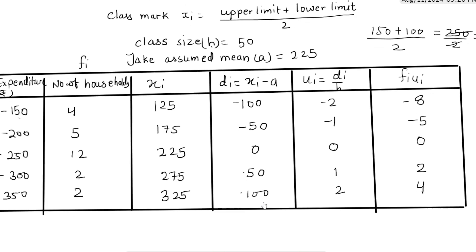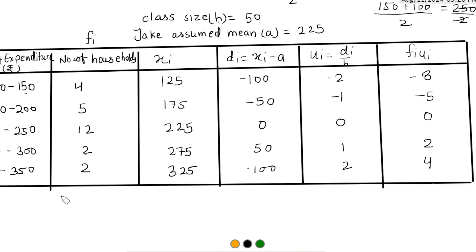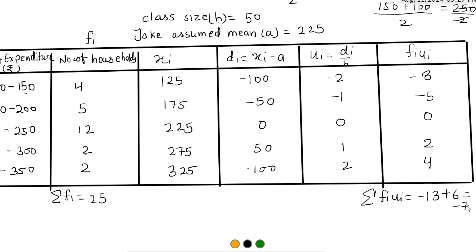The next step is to find the summations. We need Σfi and Σfi·ui. For Σfi: 4 + 5 = 9, 9 + 12 = 21, 21 + 2 = 23, 23 + 2 = 25. So Σfi = 25. For Σfi·ui: the negative values are −8 and −5, sum = −13; the positive values are 2 and 4, sum = 6. So Σfi·ui = 6 − 13 = −7.